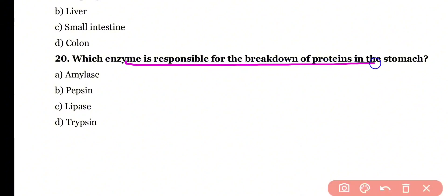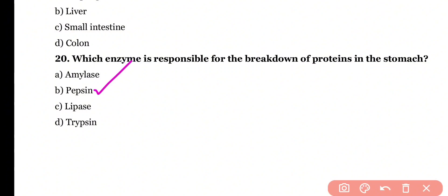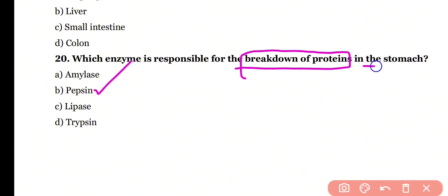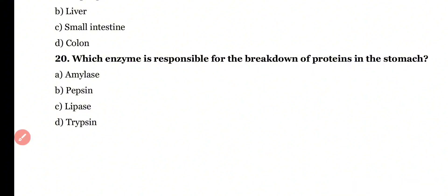Question 20. Which enzyme is responsible for the breakdown of proteins in the stomach? Amylase, pepsin, lipase, or trypsin? Correct answer is option B. Pepsin is the enzyme responsible for the partial breakdown of proteins in the stomach.